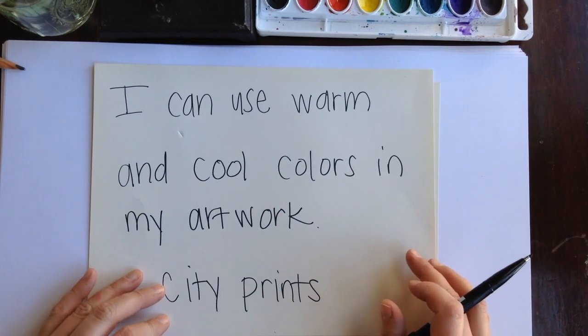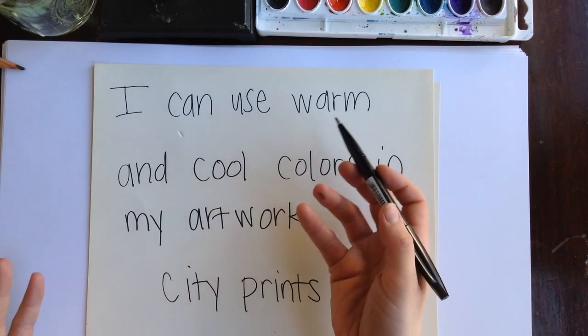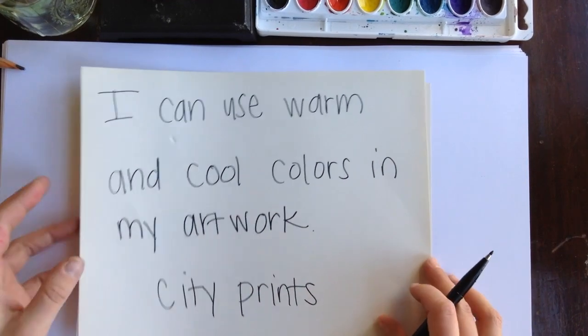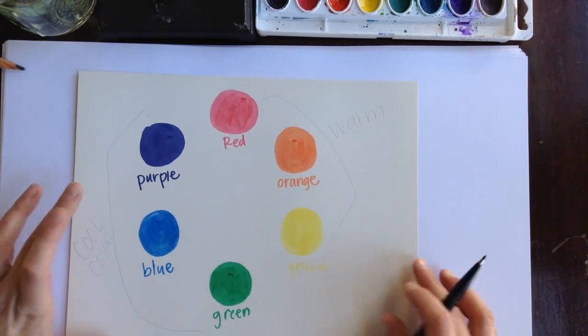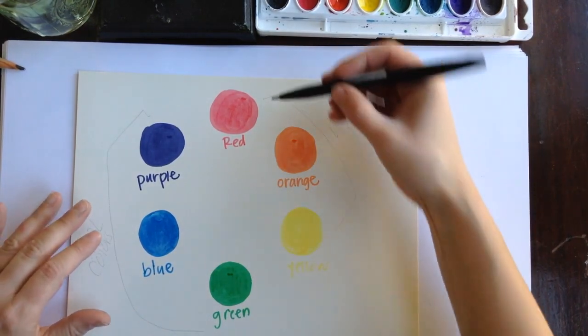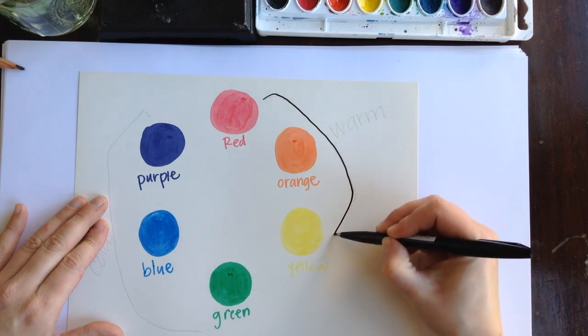To start the City Prints project, we're going to start with a warm and cool background so we can see that you know to use warm and cool colors in your artwork. First thing is we need to know which are the warm colors and which are cool colors. So looking at the color wheel, warm colors are typically red, orange, and yellow.